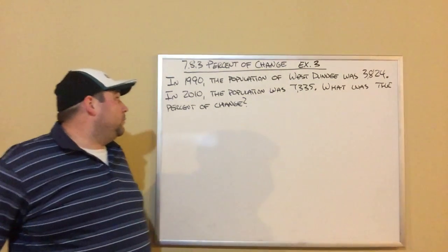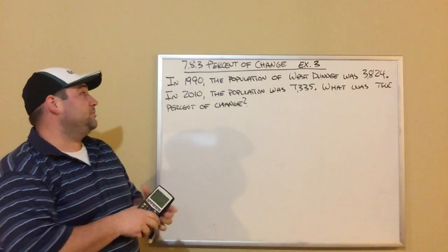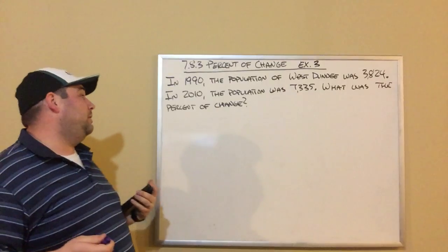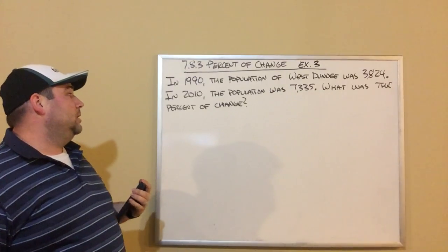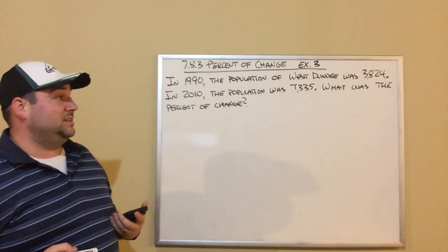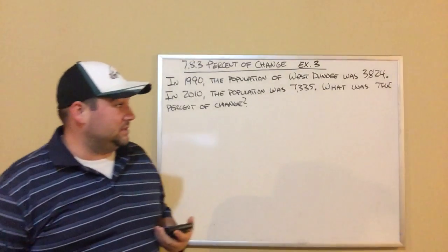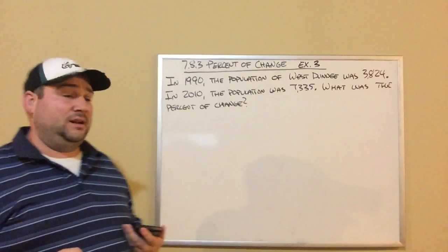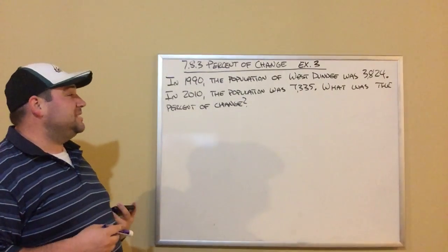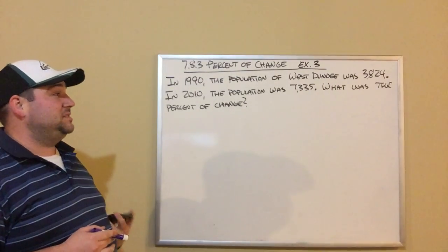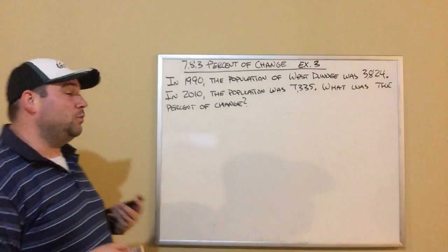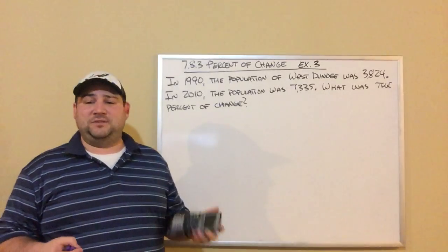Okay, seventh grade, we've got example 3 on percent of change. This is a word problem. The word problem states: in 1990, the population of West Dundee was 3,824. In 2010, the population was 7,335. What was the percent of change?